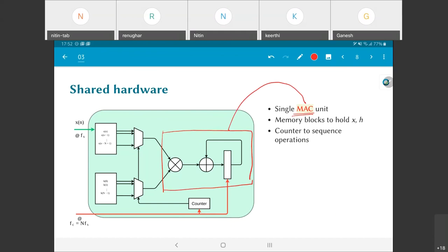If I compare this in terms of total hardware usage against my original direct form 1 implementation, total hardware what do I need over here: 1 multiplier, 1 adder, 1 accumulator register, 1 counter up to n which will be some log n bits in width, and 2 memory blocks.